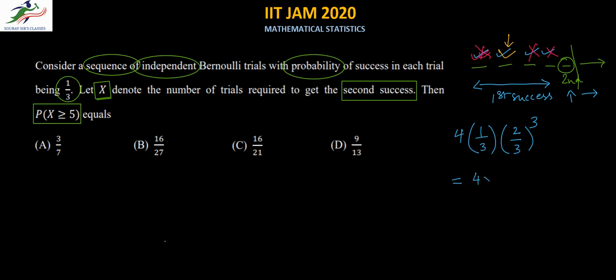So that means that this comes out to be four into eight divided by 81, or 32 by 81. Now you notice that none of the options are giving us 32 by 81, so there is a mistake that they committed while preparing the answer.